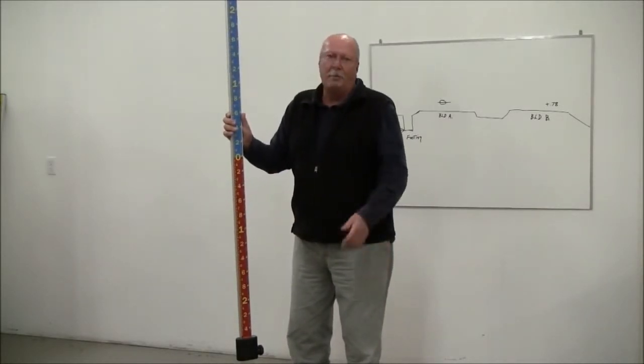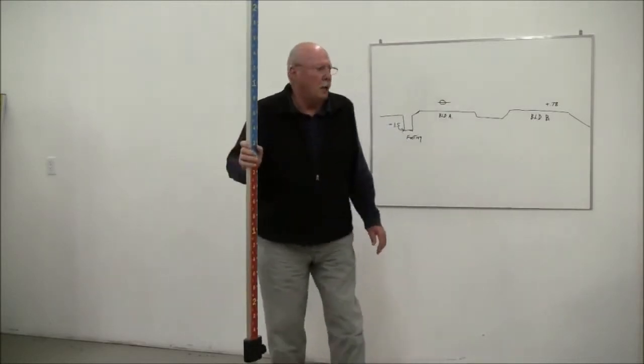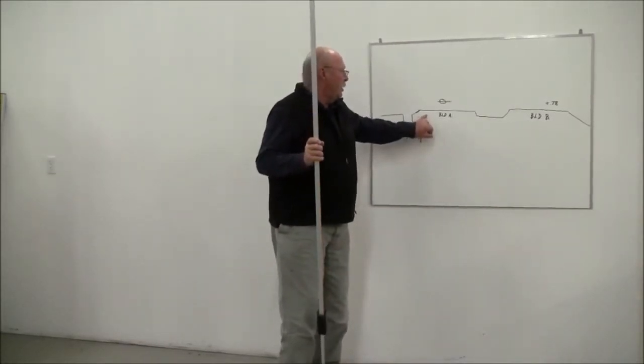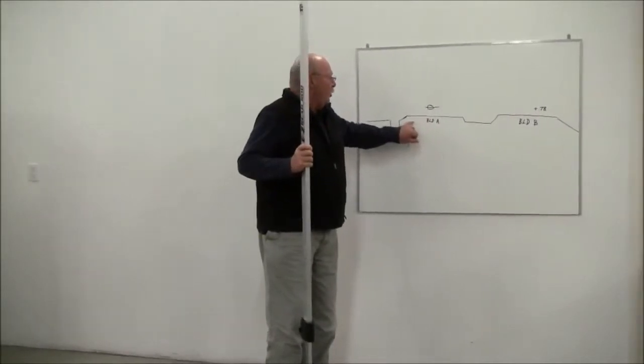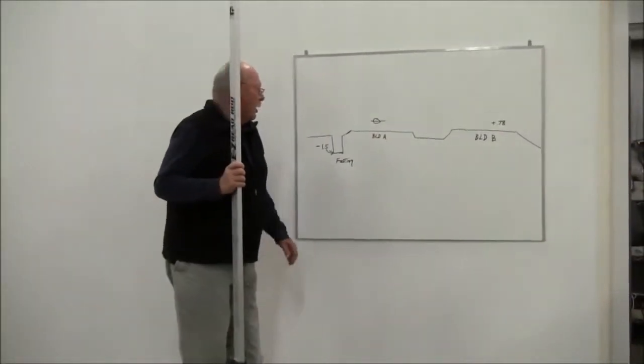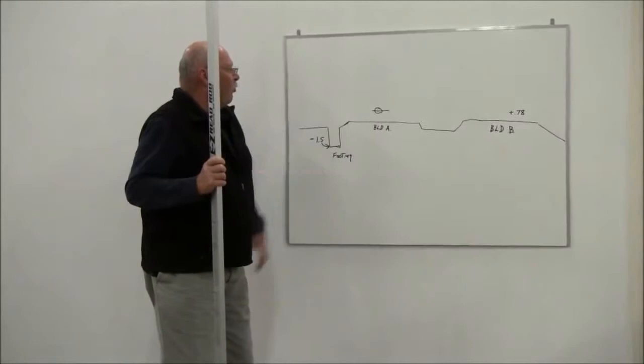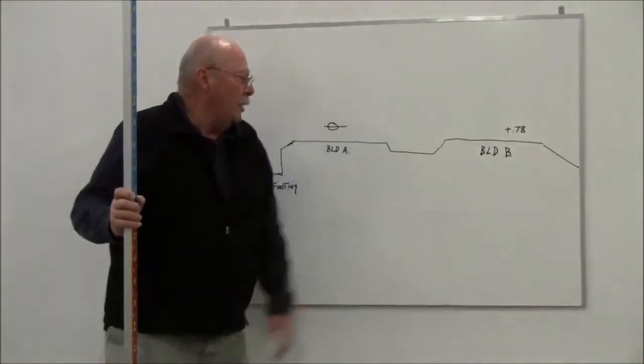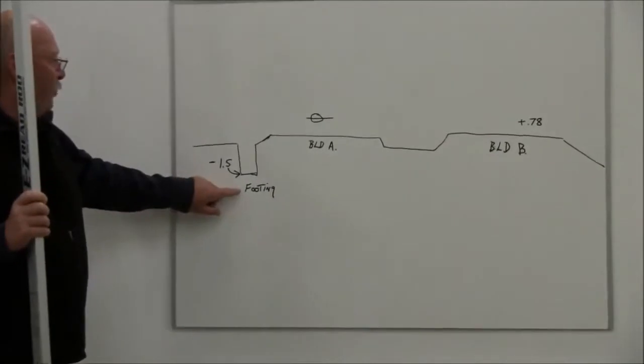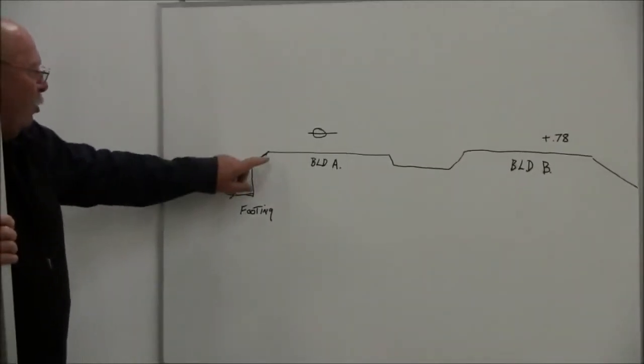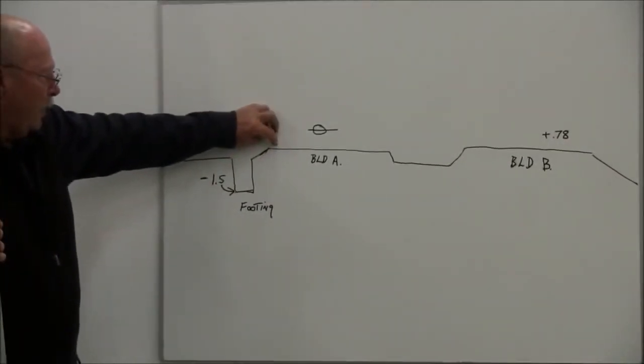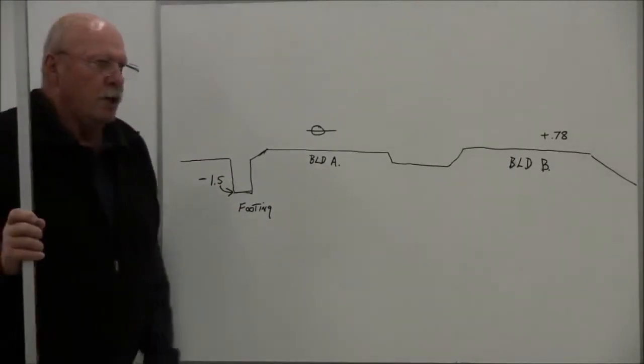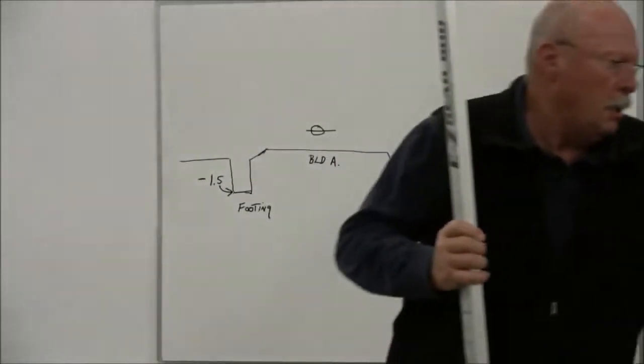So what we've done here, I've got an illustration on this board and we have a hypothetical job site set up. This is building A finished floor. I will say that this is building B subgrade and we have a footing elevation of 1.50 and that's below this point right here, the zero point. So what I'm going to do is let me get the rod set up.